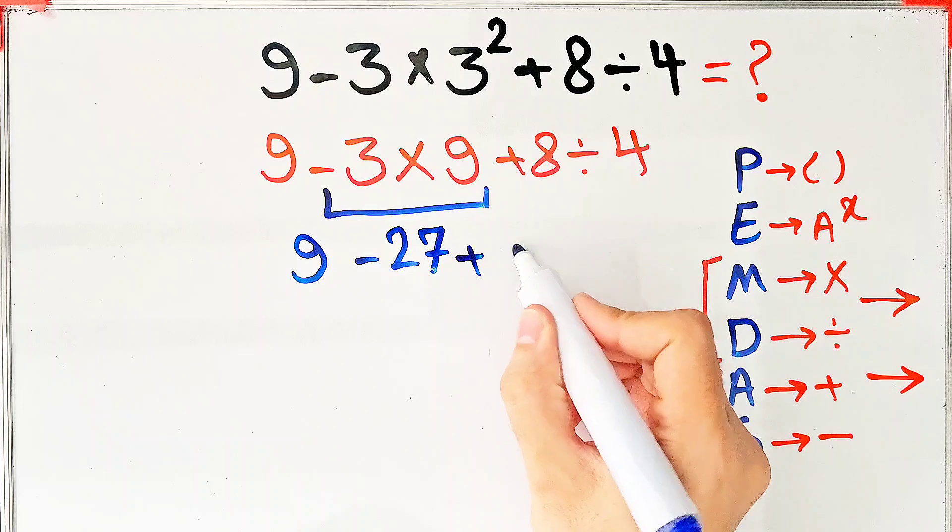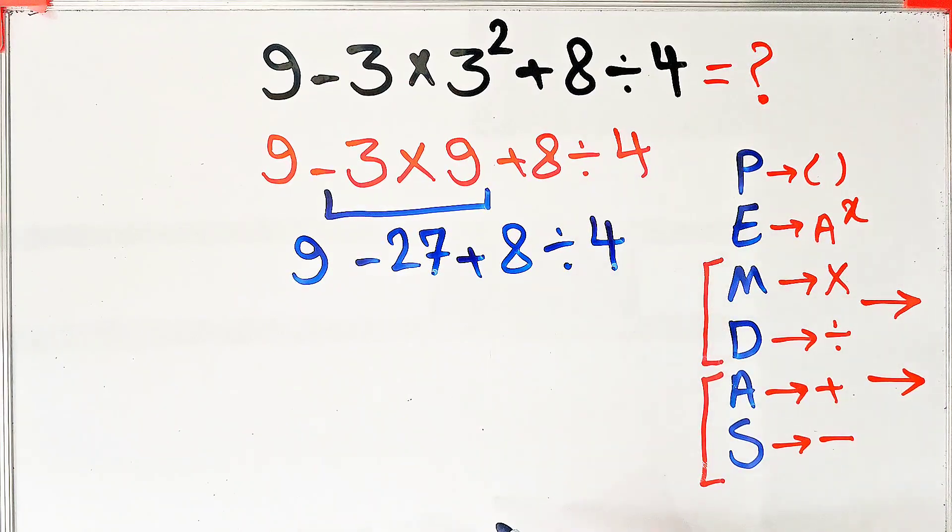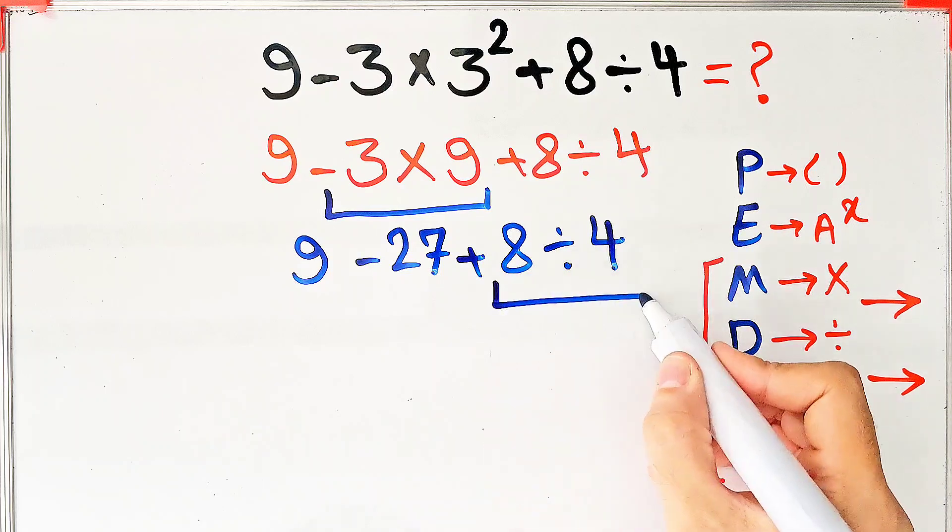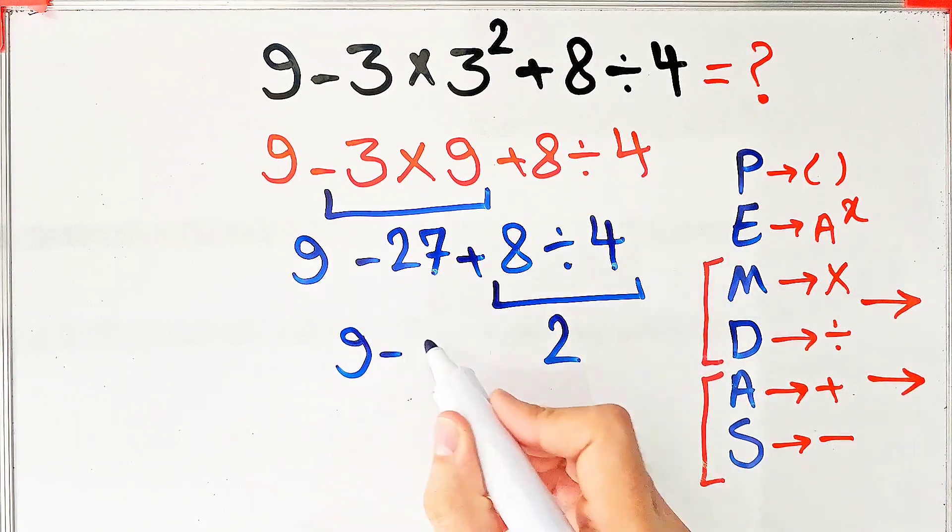We have 9 minus 27, plus 8, then divided by 4. Now we do this division. 8 divided by 4 equals 2. Now we have 9 minus 27, plus 2.